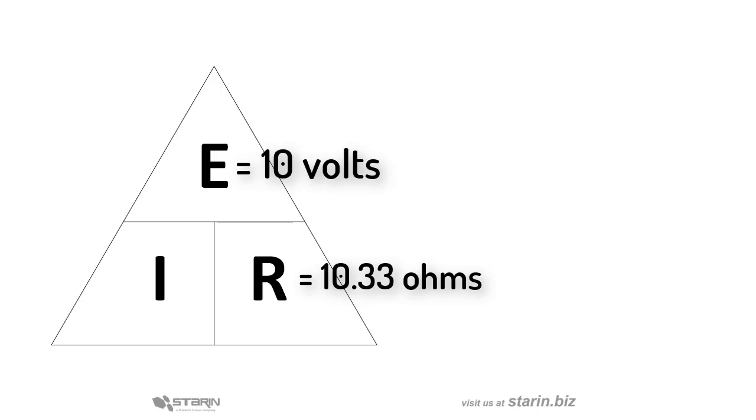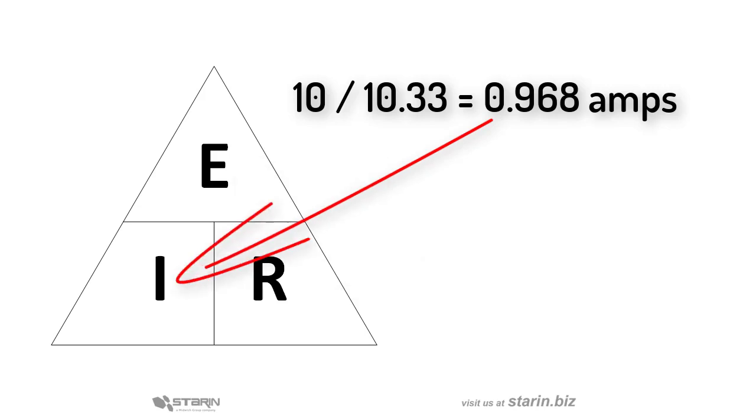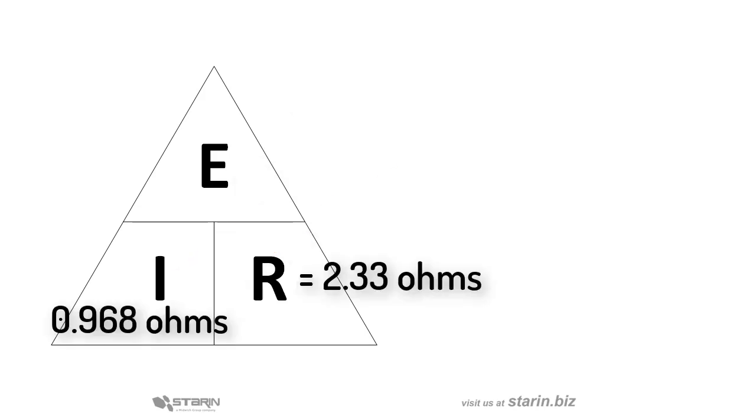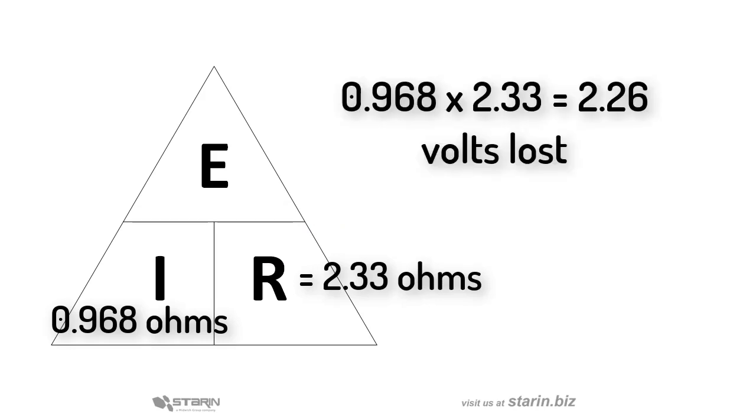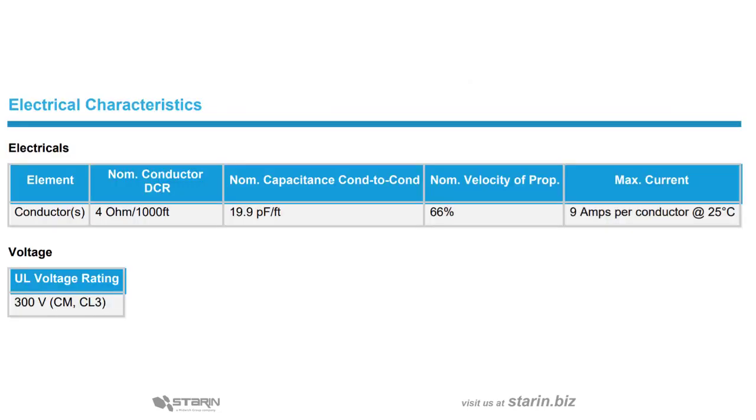Now using Ohm's law, we divide 10 volts by the circuit resistance to get 0.968 amps of current in the total circuit. Then once we know that, we multiply the current by the cable resistance to get 2.26 volts lost in the 100 foot cable run. Yikes! That's almost a quarter of the amplifier's power output lost.